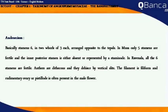Androecium: Basically, stamens are six, in two whorls of three each, arranged opposite to the tepals. In Musa, only five stamens are fertile and the inner posterior stamen is either absent or represented by a staminode. In Ravenala, all six stamens are fertile.